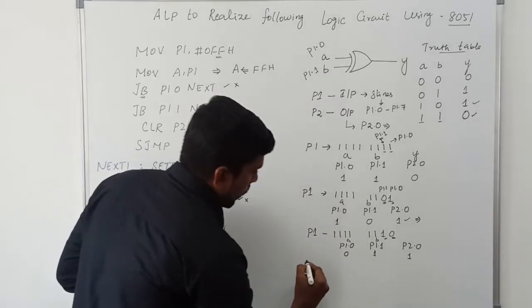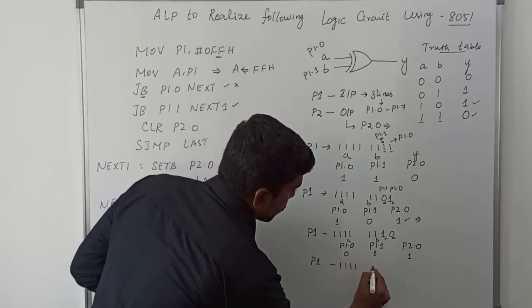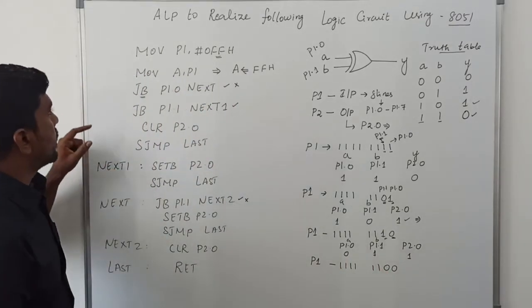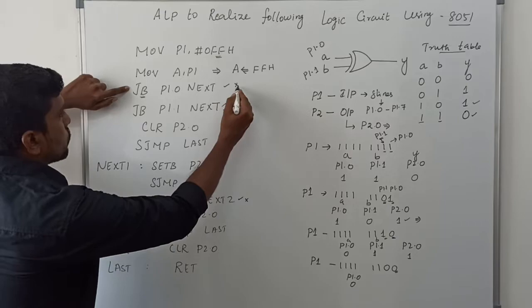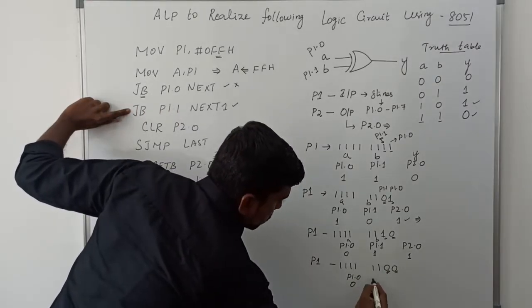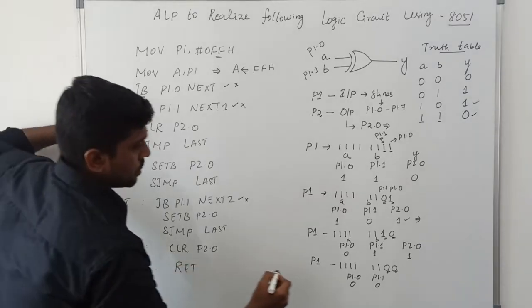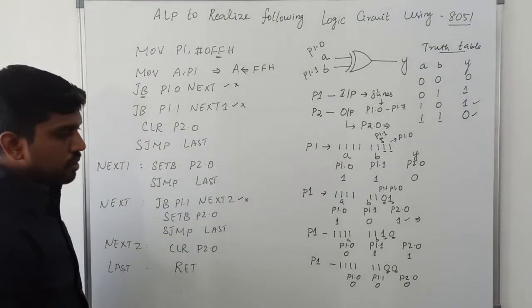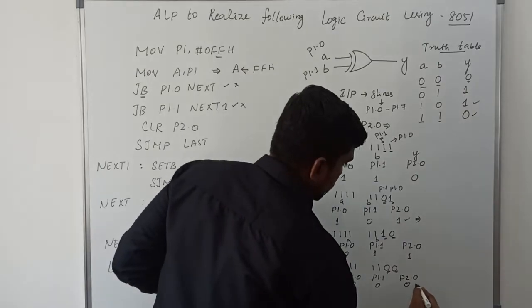One more possibility: Port 1 value 1111 1100, so both P1.0 and P1.1 are 0. JB P1.0 NEXT: P1.0 is 0, condition is false, executes next instruction. JB P1.1 NEXT2: P1.1 is also 0, condition is false, so CLR P2.0 executes and P2.0 is set to 0. SJMP LOOP returns. Checking the truth table: both inputs 0-0, output is 0 — this condition also satisfies.